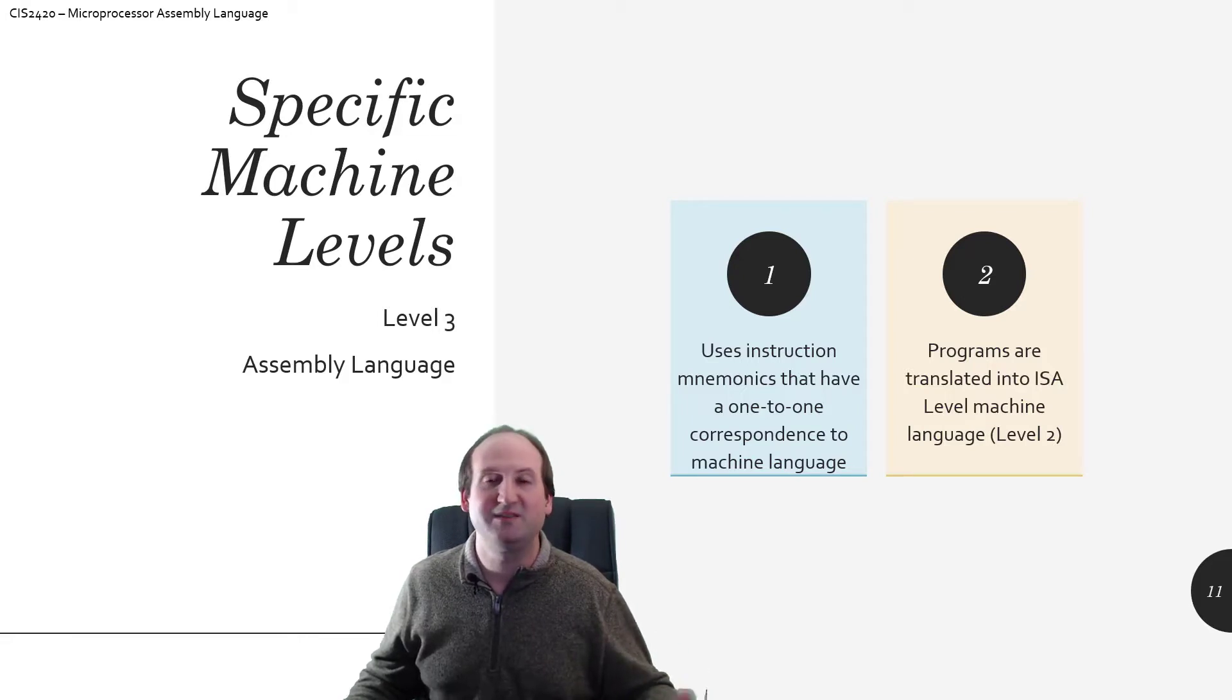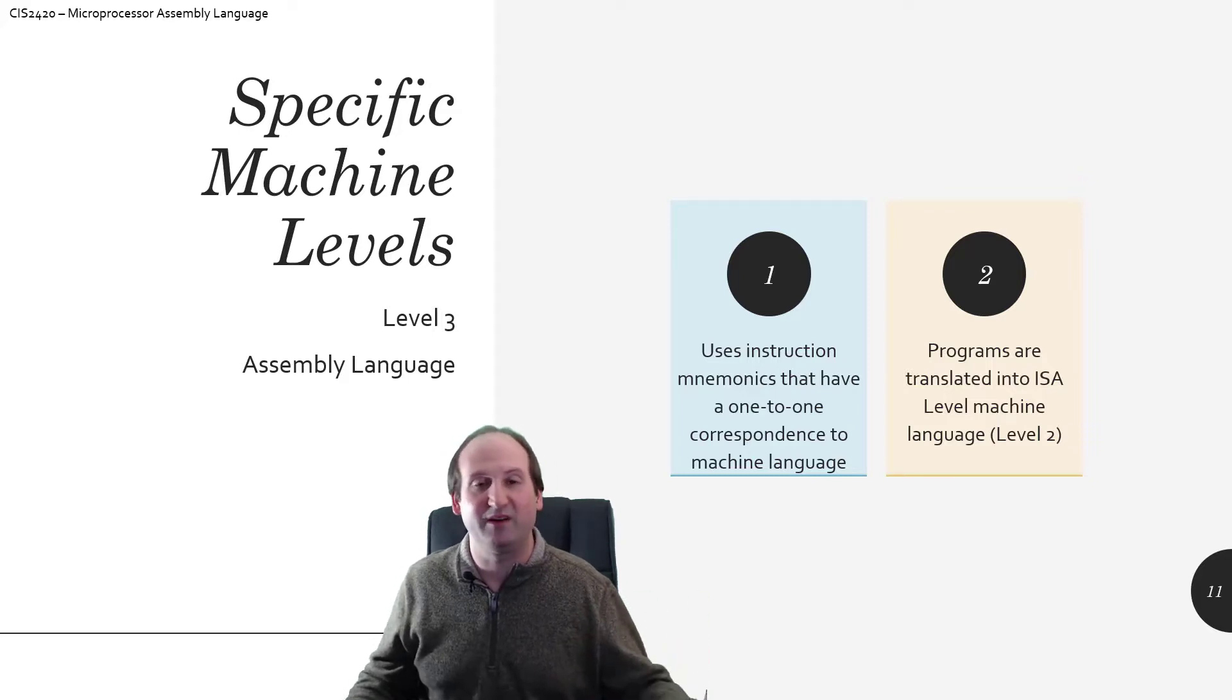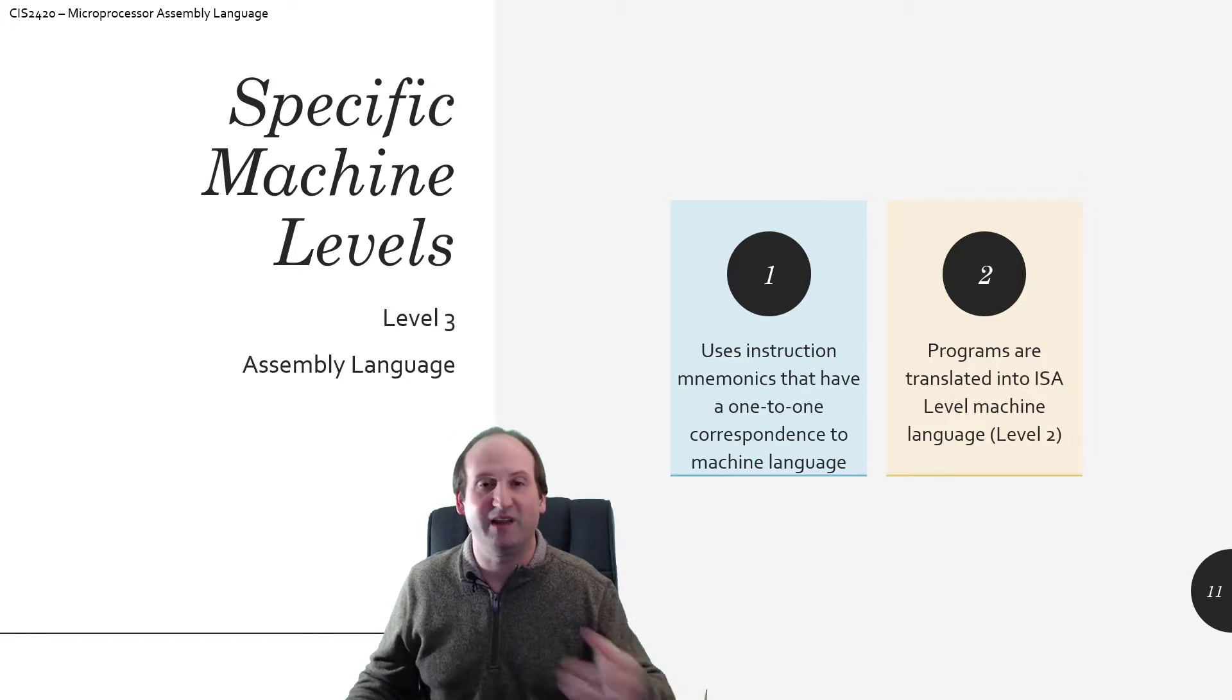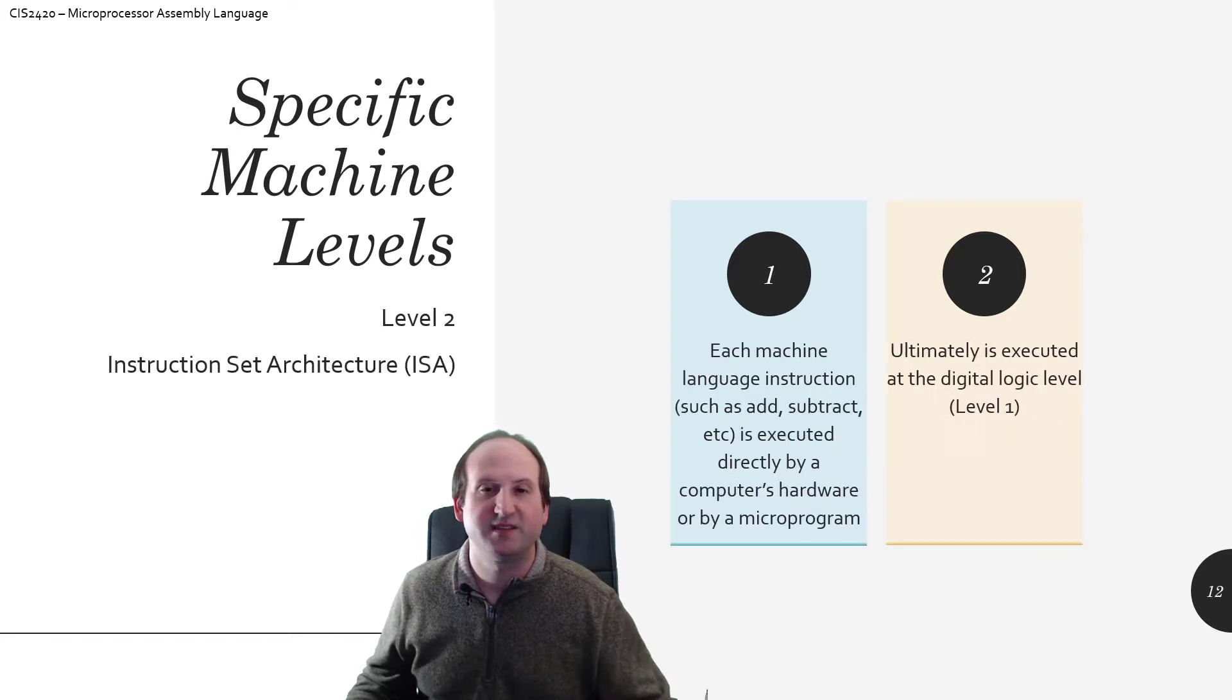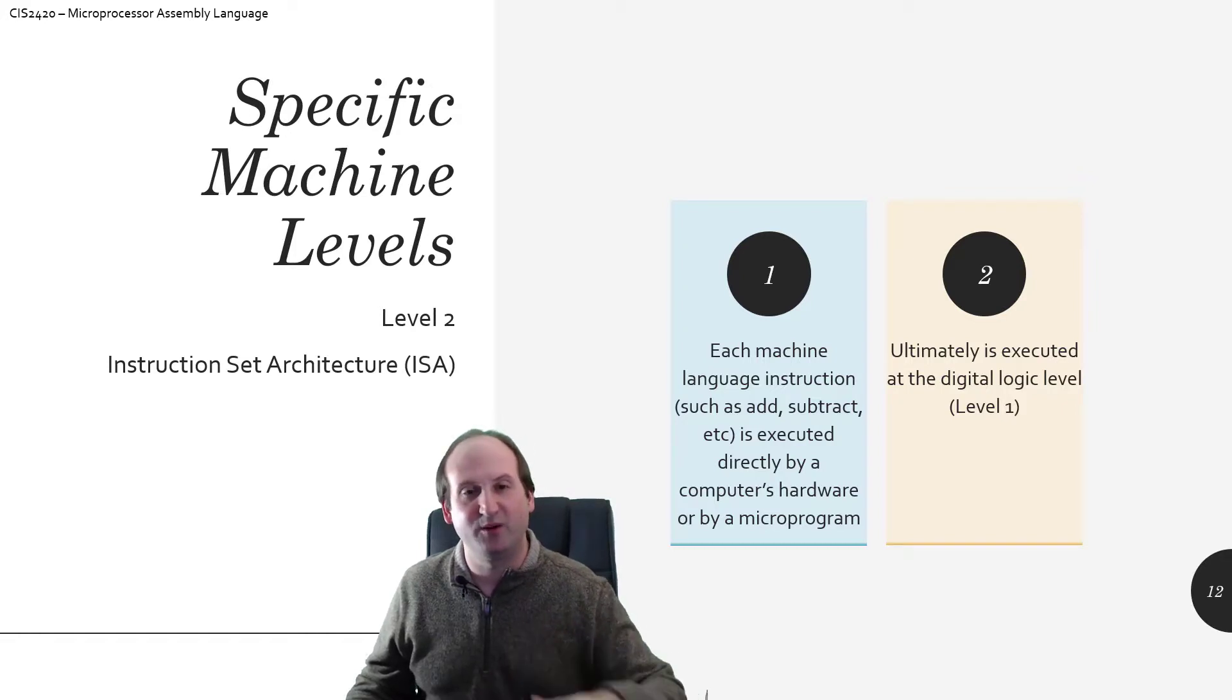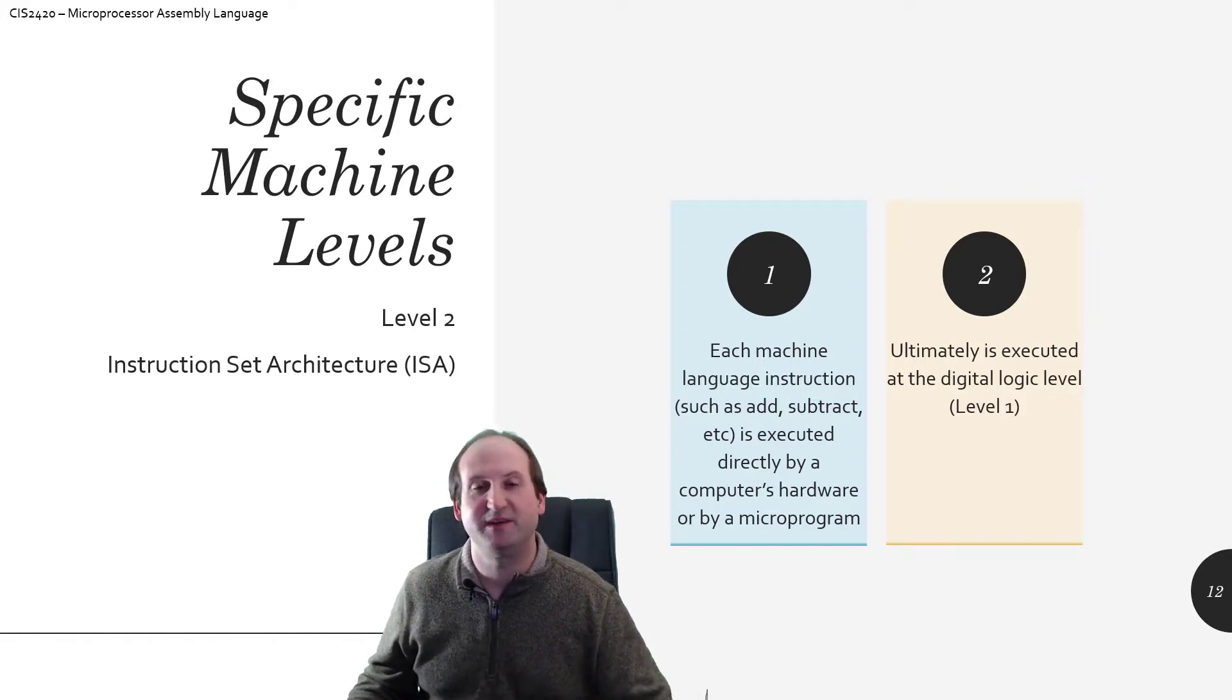So, these programs, assembly language and then working our way down to machine level language, are programs that are translated into what we'll call ISA. We'll see that in the next slide. That level two style machine language. So this level two instruction set architecture, otherwise known as ISA, that is a level a little bit below what we're going to be doing in this course because it's basically how do we get that machine language, how do we get that assembly language down to the machine language, and that machine language onto the physical logic chips, the silicon chips that we're actually going to be using to run the program.